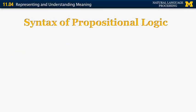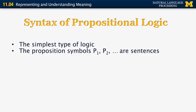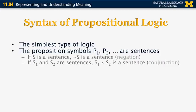So we're going to start now with the simplest logical representation, something called propositional logic. So again, this is the simplest type of logic. It involves proposition symbols, P1, P2, which correspond to what is known as sentences. And then we have some rules that build more complicated sentences from simpler ones. So if S is a sentence, not S is also a sentence. If both S1 and S2 are sentences, S1 and S2 is also a sentence.